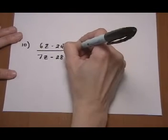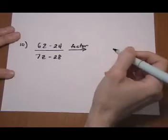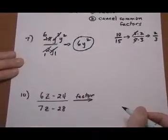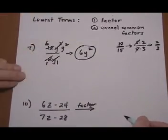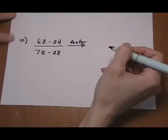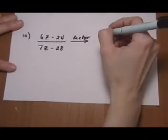But we don't want to do that until we factor. So always factor first. The one up here we didn't have to factor because it's already a bunch of pieces being multiplied together. It's already factors. But this one's not. This one has separate terms. So we factor.